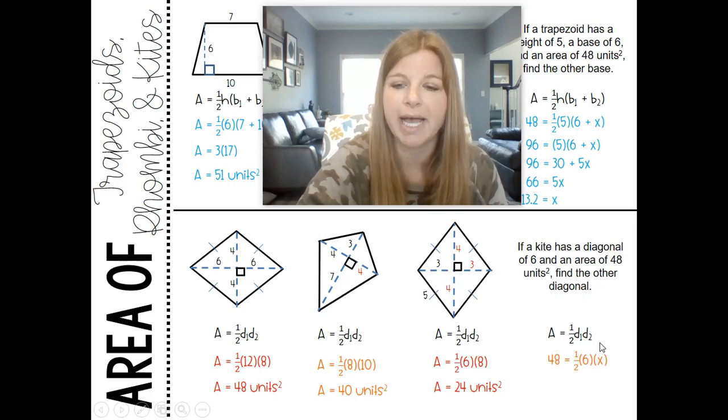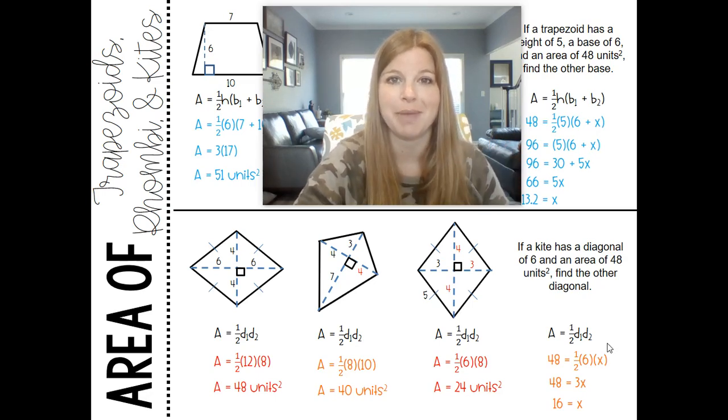If a kite has a diagonal of six and an area of 48 units, find the other diagonal. So 48 would be equal to one half times six times x, which really is 48 equals 3x, and then x equals 16. I hope this video was helpful for you. Thank you so much for watching, bye.